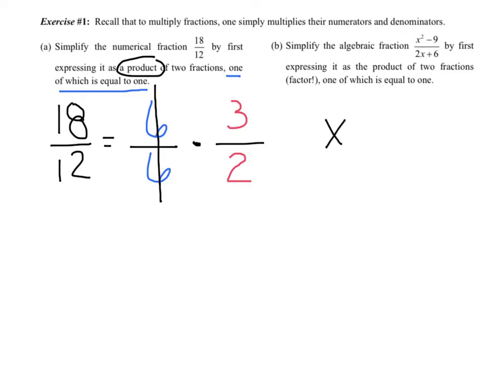Simplify the algebraic fraction. So I've got x squared minus 9 all over 2x plus 6. Okay, by first expressing it as the product of two fractions. Factor is the hint, one of which is equal to 1.